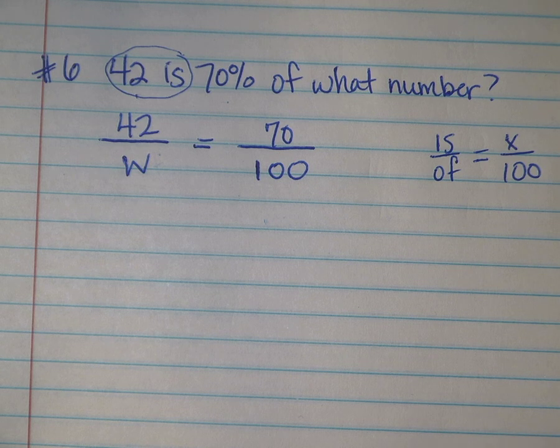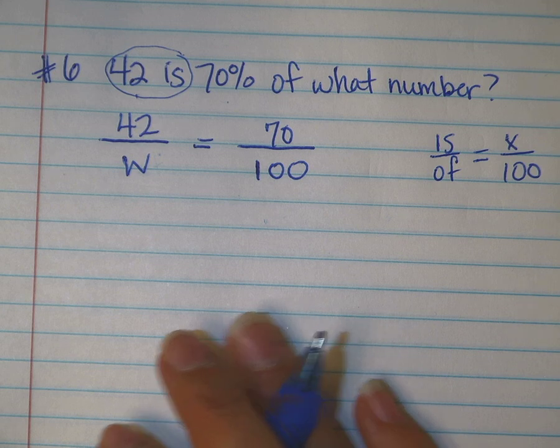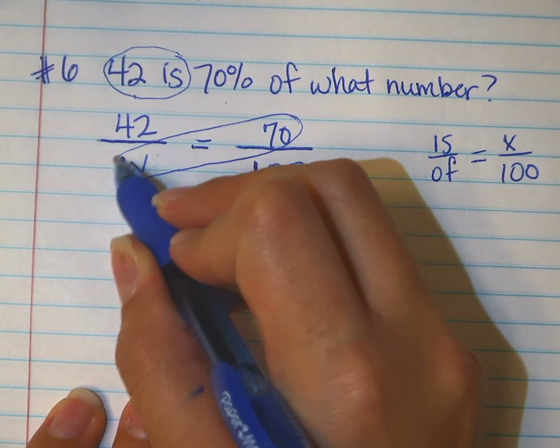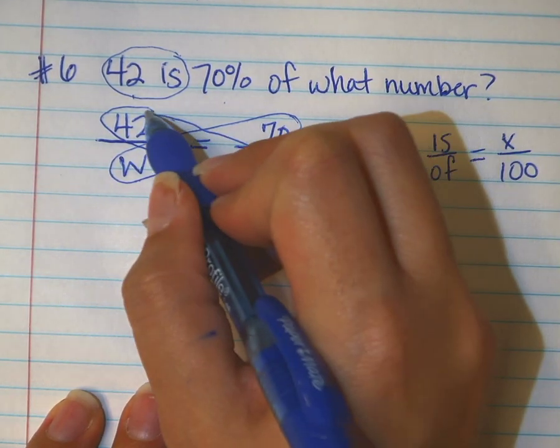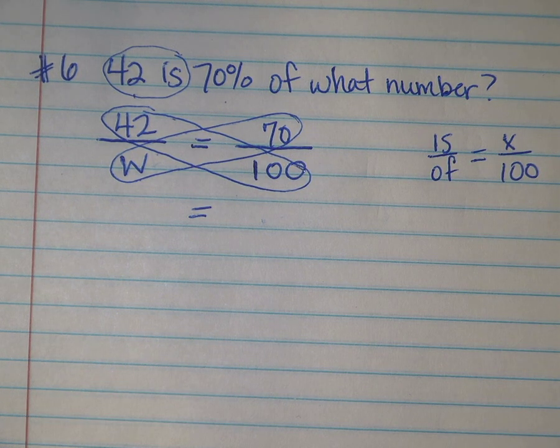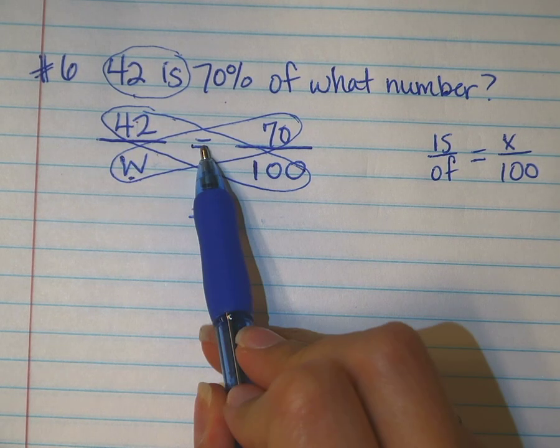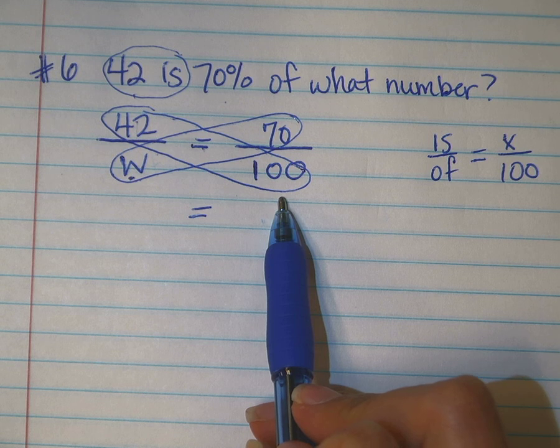Sometimes there's a shortcut. This time we're going to go ahead and show cross multiplication and division. So, make loops around so I know that you're understanding what to do. And your equal sign needs to be brought down. A lot of people forget about that equal sign, but you are actually telling me 42 over W is exactly the same as 70 over 100. If you're not writing this down, you should.